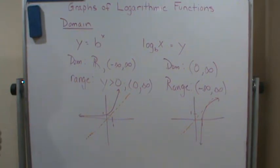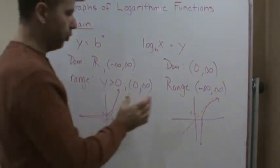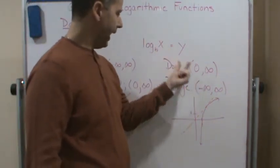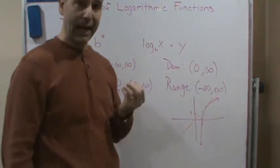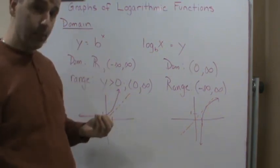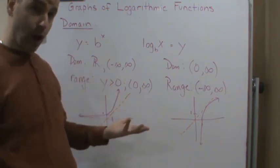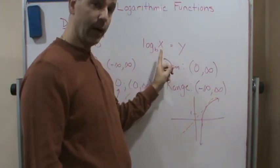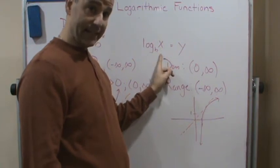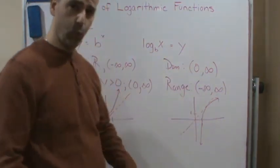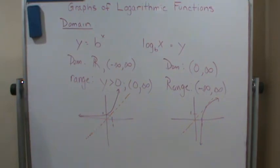How do you determine the domain? For a logarithmic function, the argument — the x value — has to be positive. You cannot take the log of a negative number. So to find the domain of a transformed log function, you look at the argument and solve for x such that the argument is greater than zero.